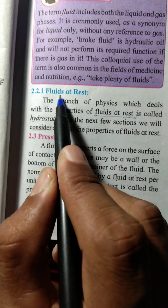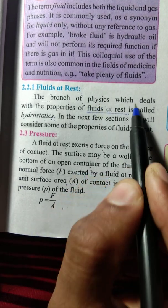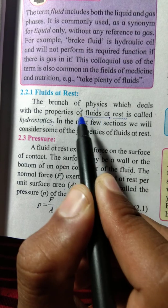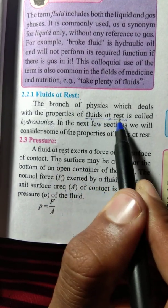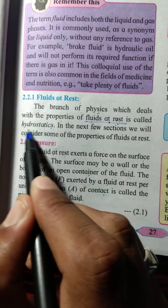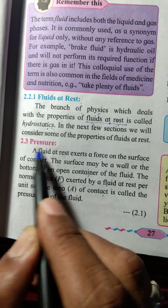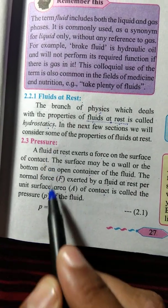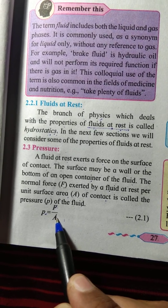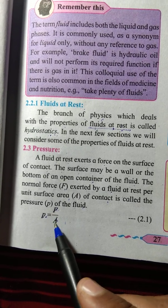The next point is fluid at rest. It is a branch of physics which deals with the study of the properties of fluids at rest. The next main point is pressure. The formula is P equals F upon A, force per unit area.